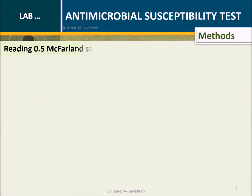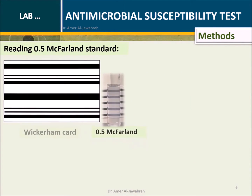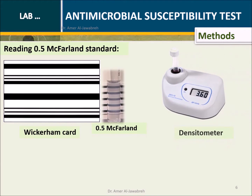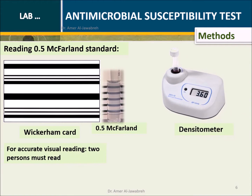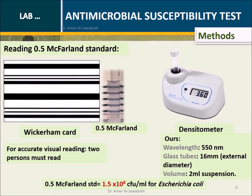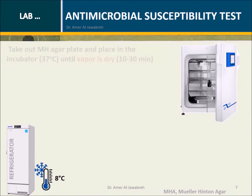Method: Read the 0.5 McFarland standard using a Wickeramp card or densitometer. For accurate visual reading with the Wickeramp card, two persons must read it. The 0.5 McFarland standard equals 1.5 × 10⁸ CFU/ml for Escherichia coli.